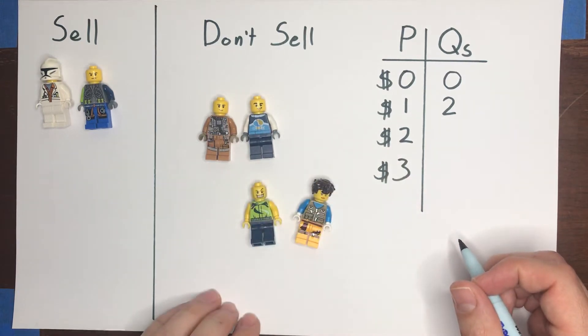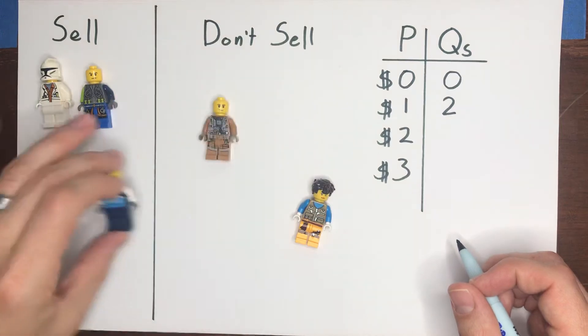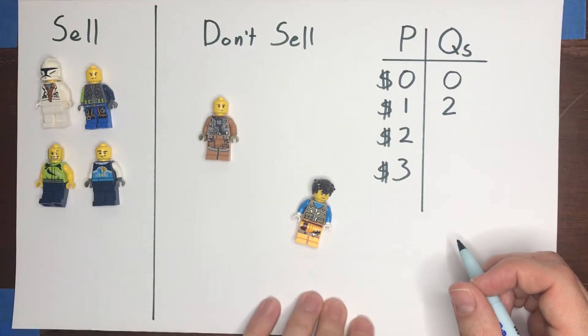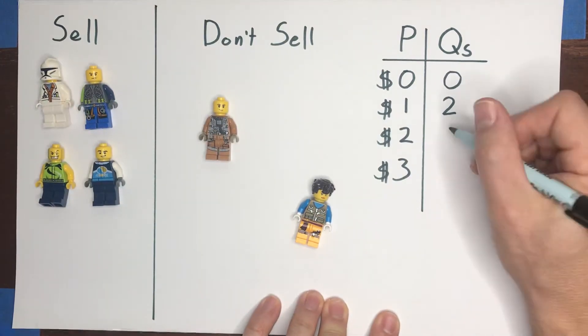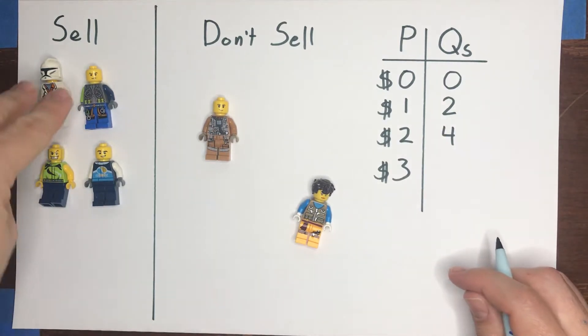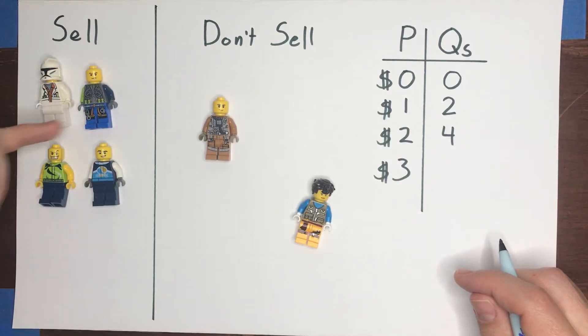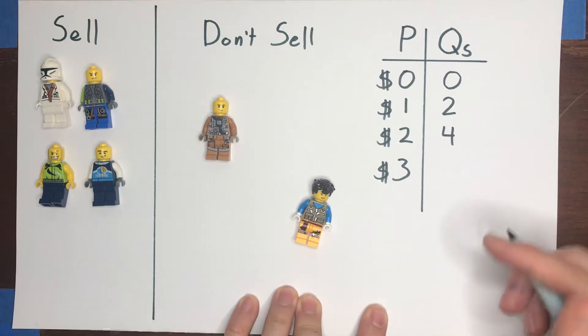Suppose that we raise the price again to two dollars and maybe now two more of these potential sellers are willing to actually sell their can. Quantity supplied would now go up to four because these two were already willing to sell for one dollar. So of course they will also accept a price of two dollars and now we've got two additional sellers who will sell at that price.